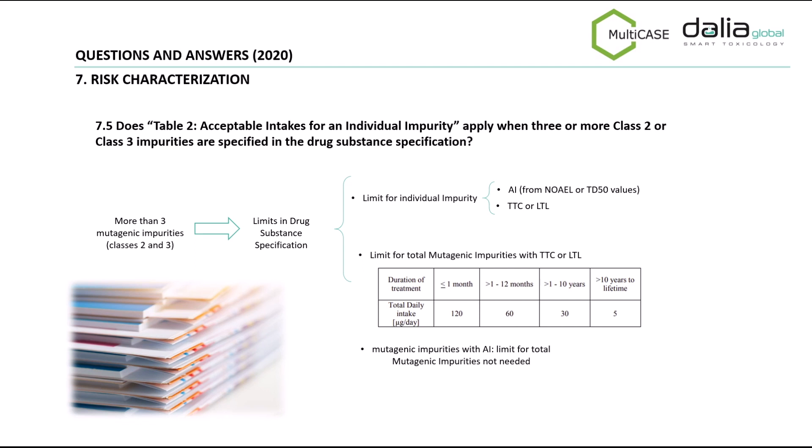For mutagenic impurities with a TTC threshold, the table in the slide summarizes the limits for multiple impurities. Mutagenic impurities with an acceptable intake threshold are excluded from total mutagenic impurity limits. For these impurities, we should only report individual limits.